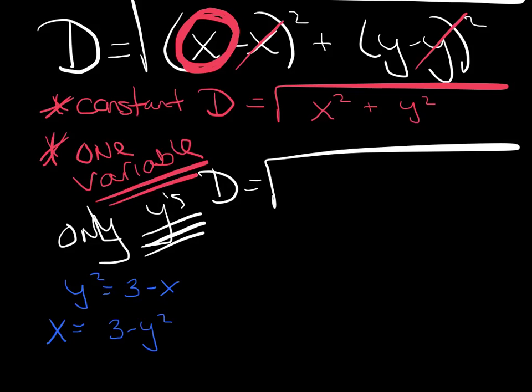So in place of X, I'm going to put in three minus Y squared, and if that quantity is squared, plus Y squared. Once you've got that, you've done the hard part. The calculus is actually the easy part.